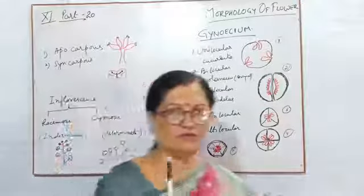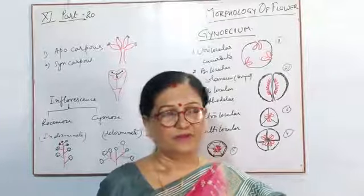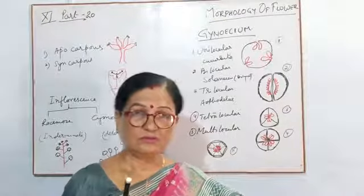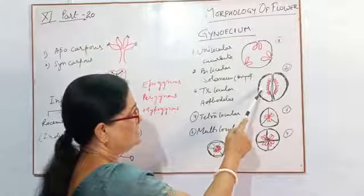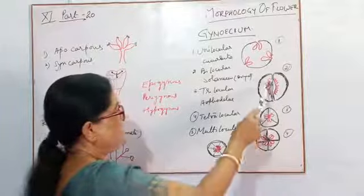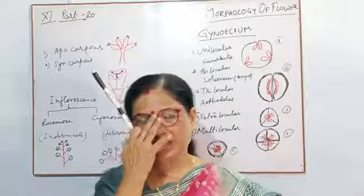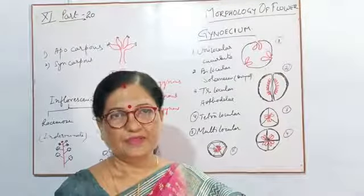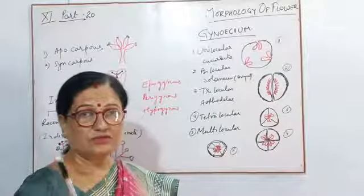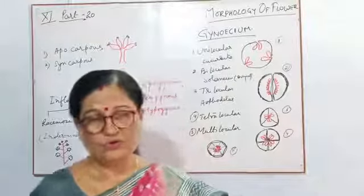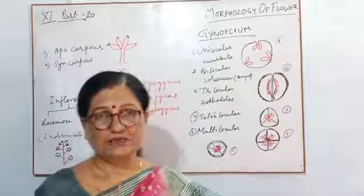Next is bilocular — 'bi' means two, so the locule is divided into two parts. As you have seen in tomato: in between, the ovules are situated over the placenta — the white part is the placenta — and these are the two locules of the ovary with the seeds. The same thing you can see in brinjal, though in brinjal it is harder to identify. This belongs to the Solanaceae family — members include tomato and brinjal.